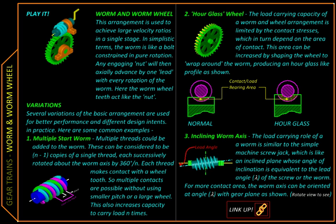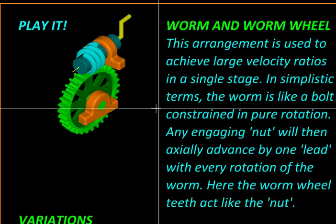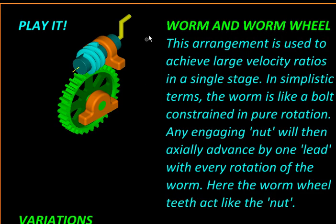So far we have seen what are simple and compound gear trains and also the epicyclic gear trains. Now we are going to look at an arrangement which allows us a large velocity ratio or large gear reduction in a single stage. This arrangement is called the worm and worm wheel.